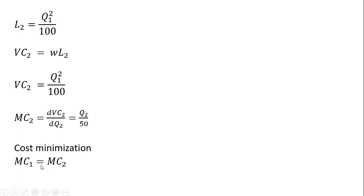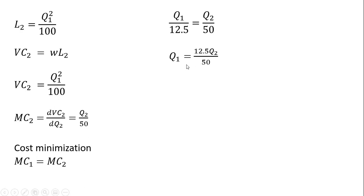Cost minimization requires that the marginal cost at each plant is equal. Setting the marginal cost at plant one equal to the marginal cost at plant two, we get this condition. Solving for output at plant one — multiplying everything through by 12.5 and simplifying the right-hand side — we get this expression: Q subscript one equals Q subscript two divided by four.